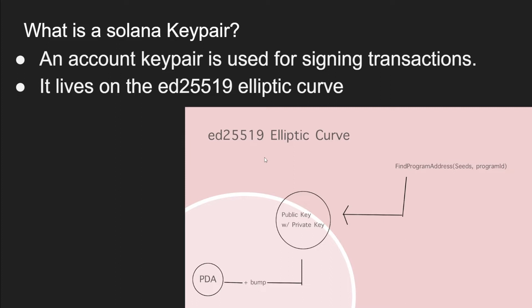A keypair account is used for signing transactions. It lives on the Ed25519 elliptic curve, so both the public key and the private key live on that curve. When you create a Program Derived Address (PDA), you can add a bump so it goes off the curve — you add one integer to the array.